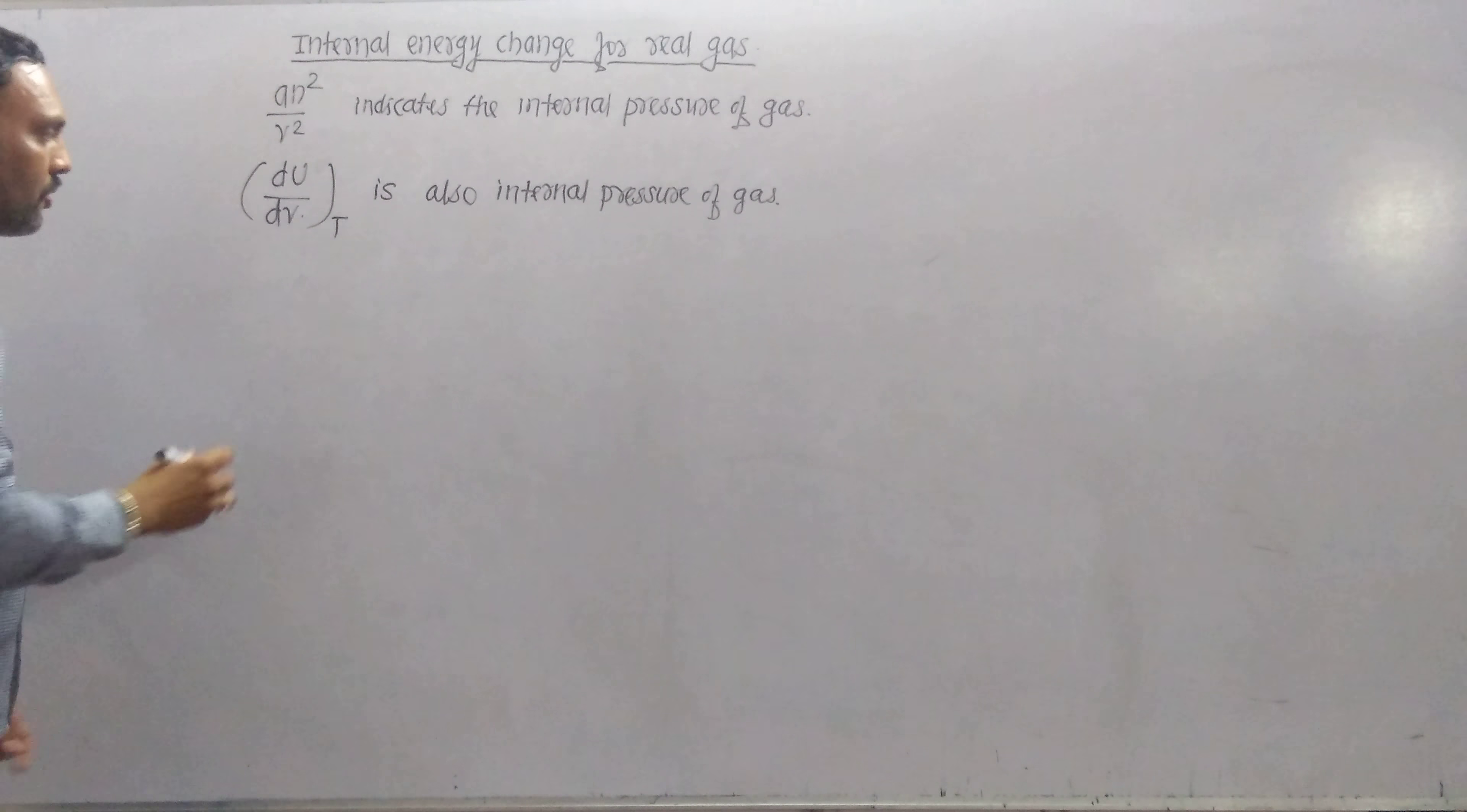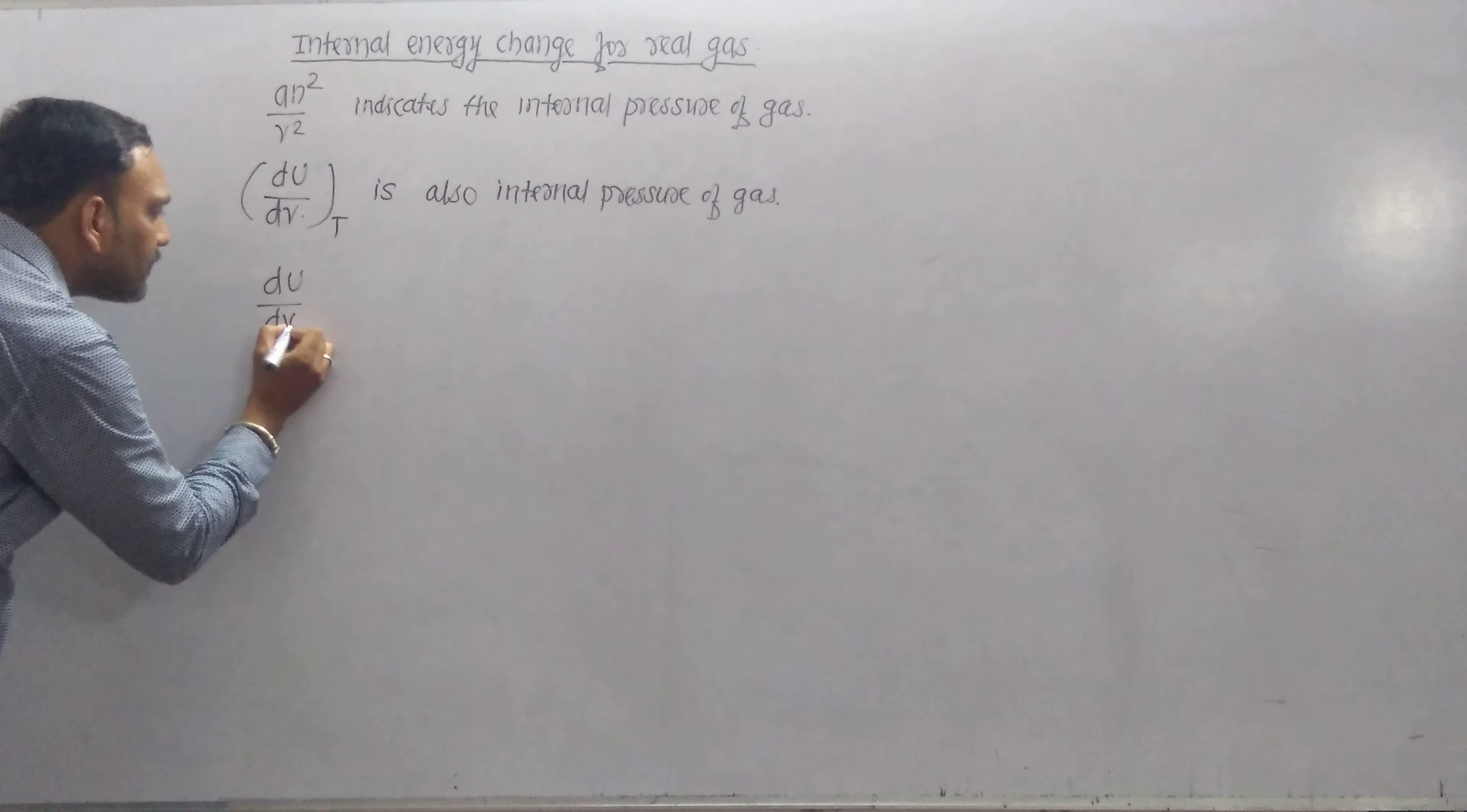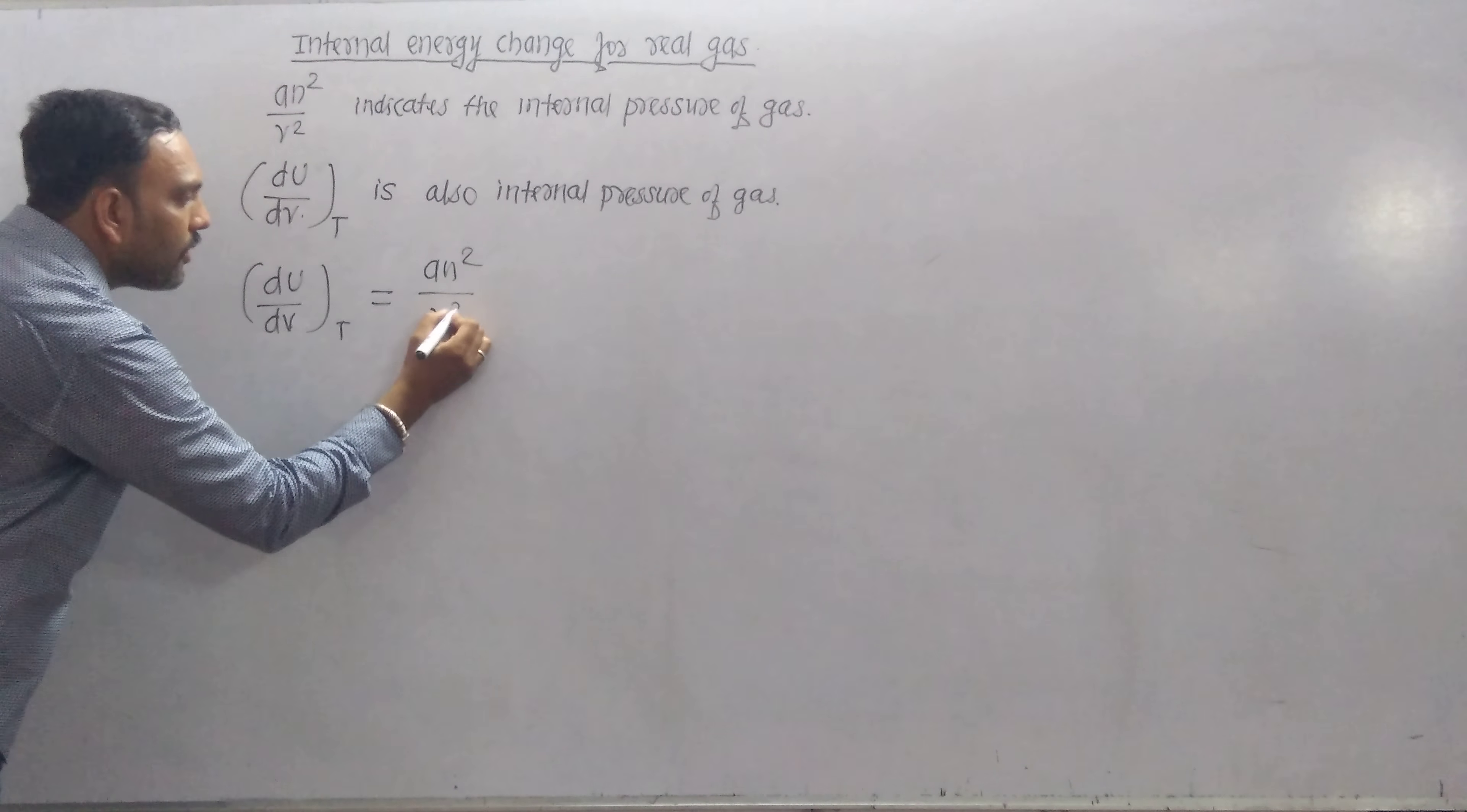By comparing these two, one can write as ∂U/∂V at constant temperature equals AN²/V².